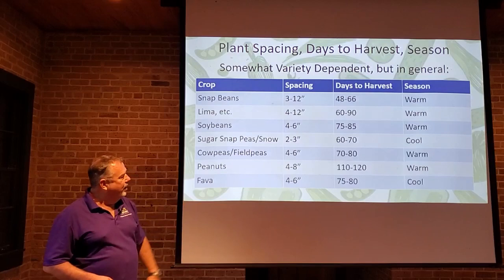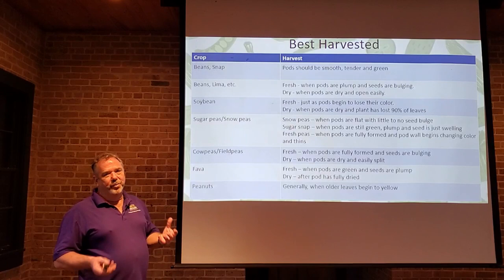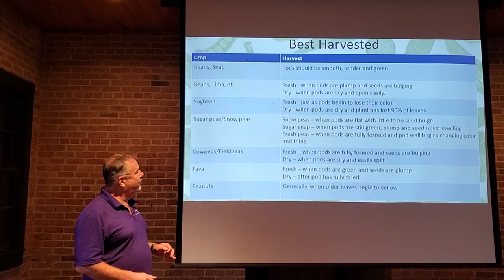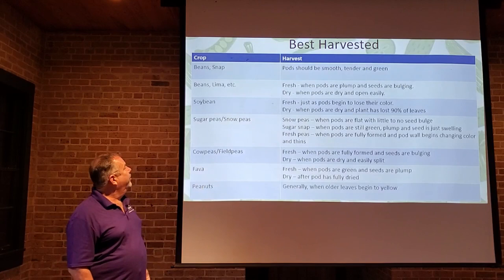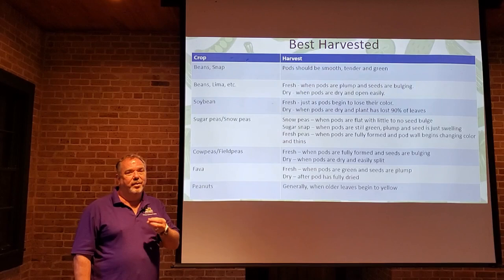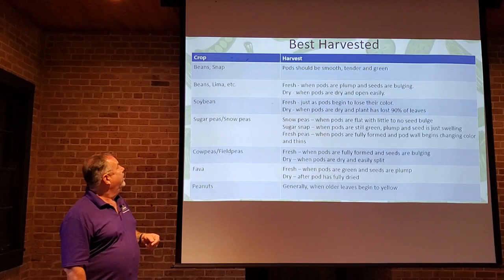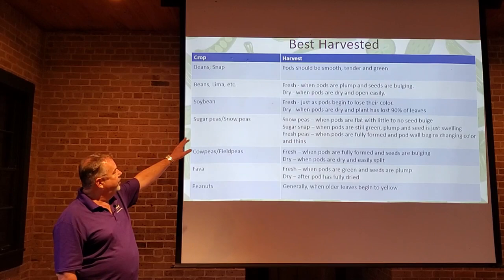Knowing the right time to harvest depends on what you're going to do with them. For snap beans, the pods should be smooth, tender, and green. You don't want to wait too long — don't let them change color or get too hard, since you're eating the whole thing. You want that outside to be smooth.